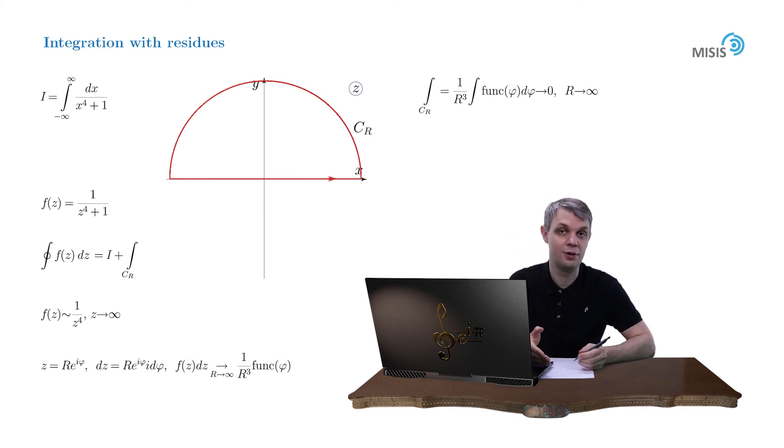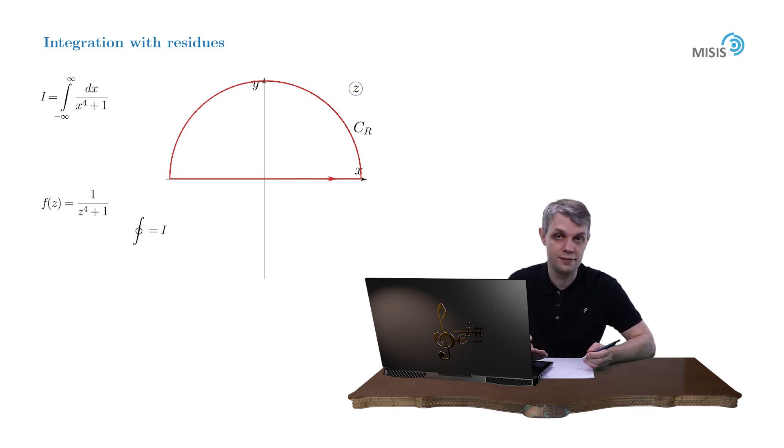That is why our closed contour integral is now simply equal to our original integral. The only thing which is left to us is to compute this closed contour integral using residue theorem. Therefore, we simply need to compute the residues of our function inside this contour. To find the poles, we need to find the roots of our denominator, so we need to solve the equation z to 4 plus 1 equals 0.